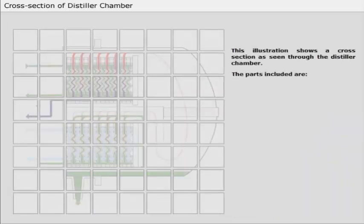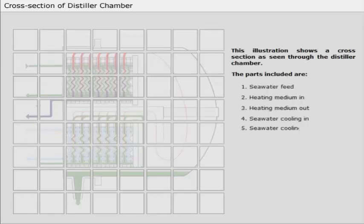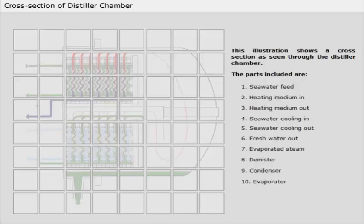This illustration shows a cross-section as seen through the distiller chamber. The parts included are... Click the names to highlight the parts.